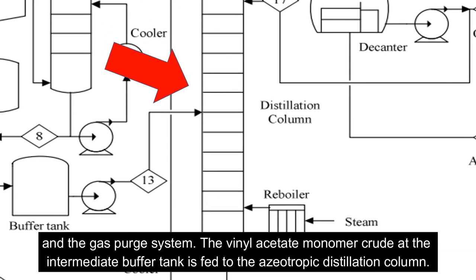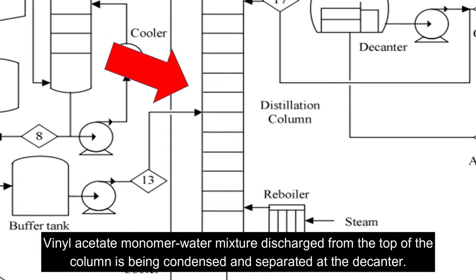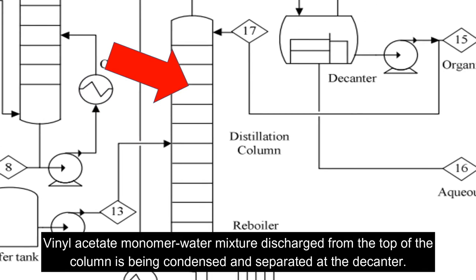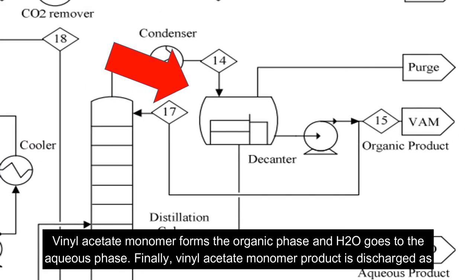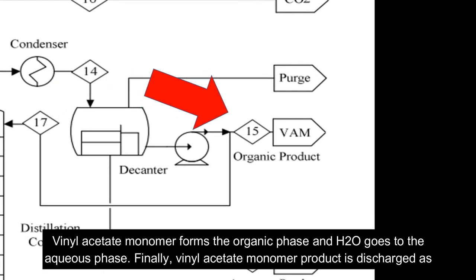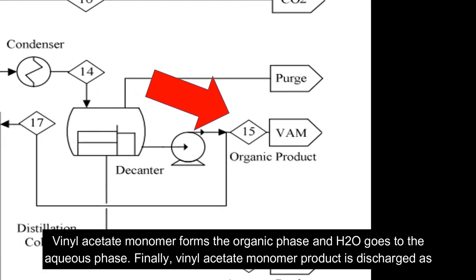Vinyl acetate monomer-water mixture discharged from the top of the column is condensed and separated at the decanter. Vinyl acetate monomer forms the organic phase and H2O goes to the aqueous phase.